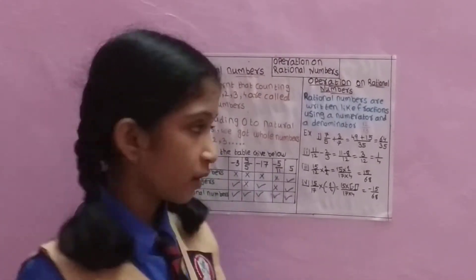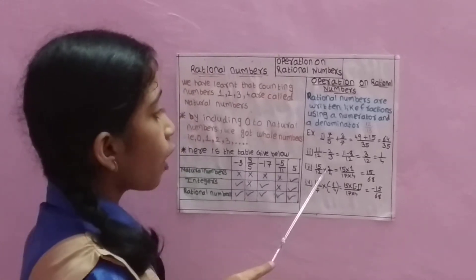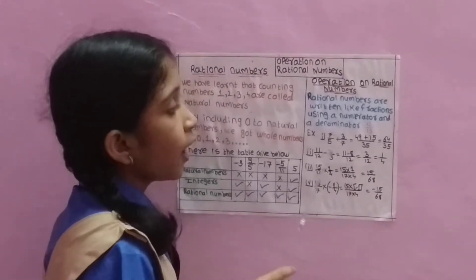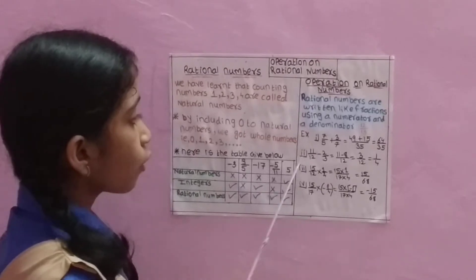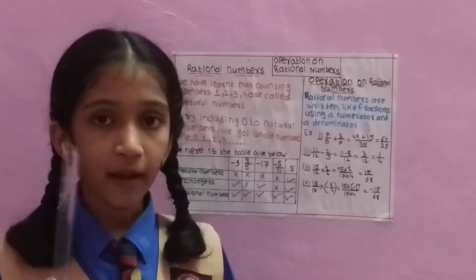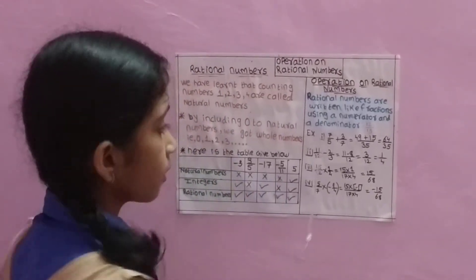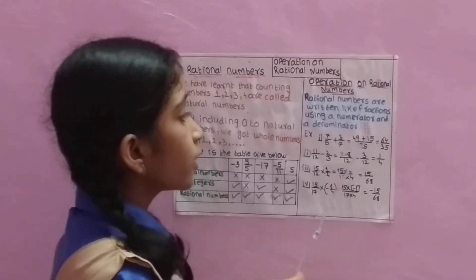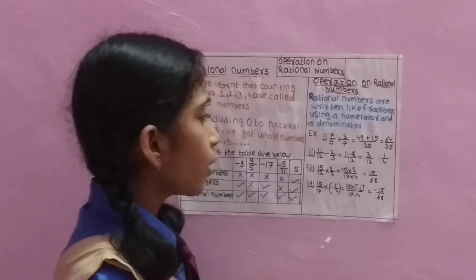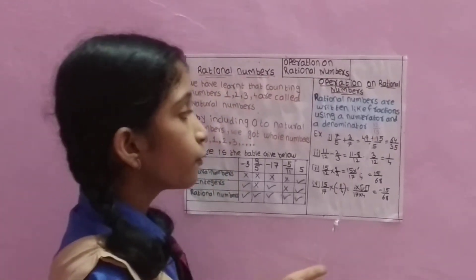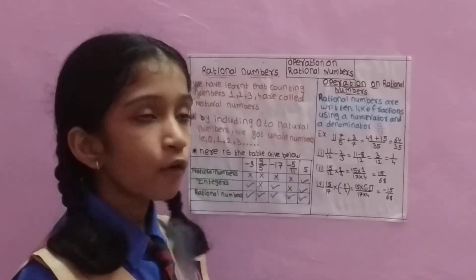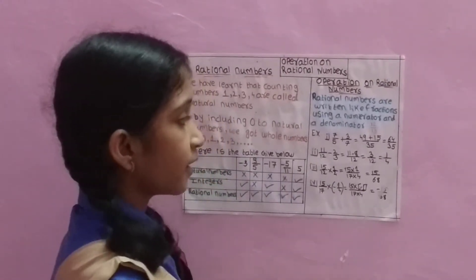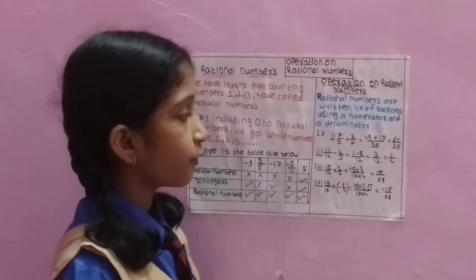How to add rational numbers: 7 upon 5 plus 3 upon 7. We have to multiply cross. Then the answer counts as 49 upon 35 and 15 upon 35. We add 49 plus 15, and the answer is 64 upon 35.